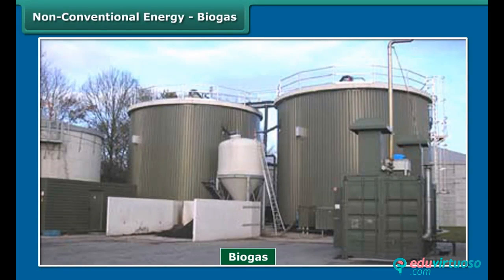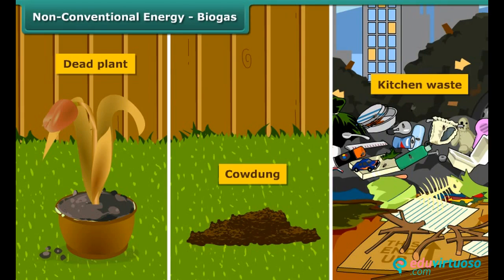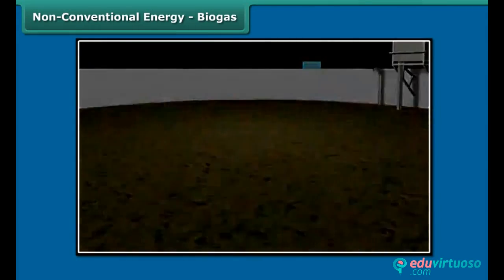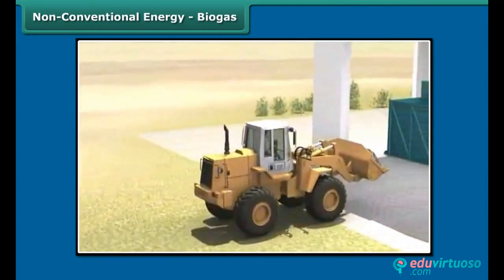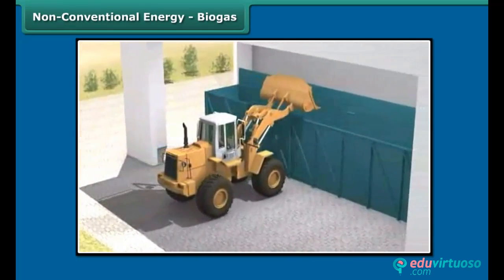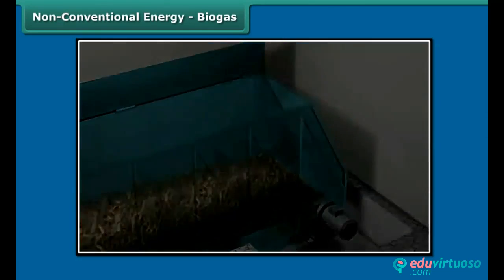Biogas is another non-conventional energy, which is a mixture of methane and hydrogen gas. Organic waste such as dead plants, animal dung and kitchen waste is decomposed by bacteria in biogas digesters to emit biogas. It is an excellent fuel for cooking and lighting purposes.